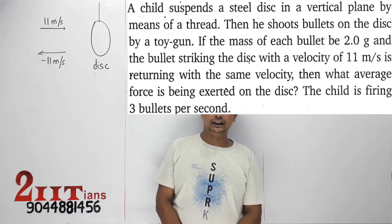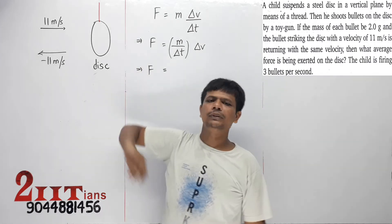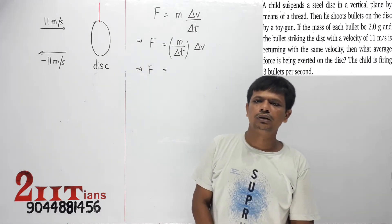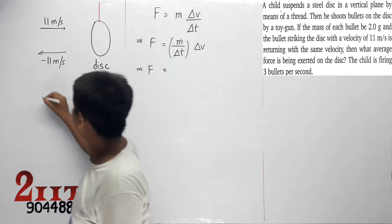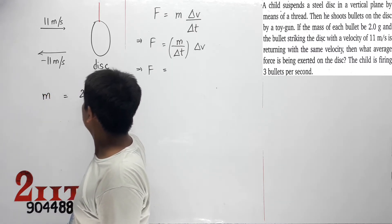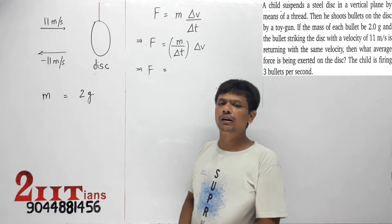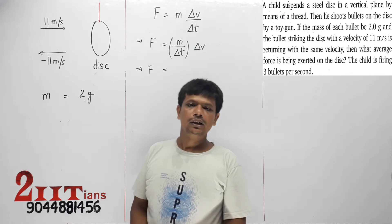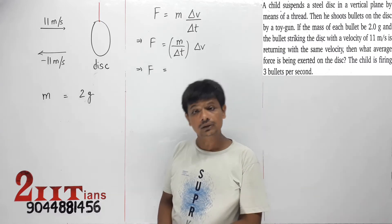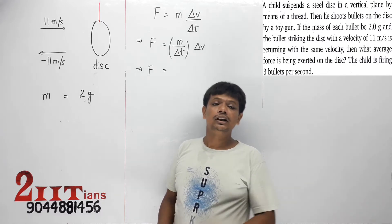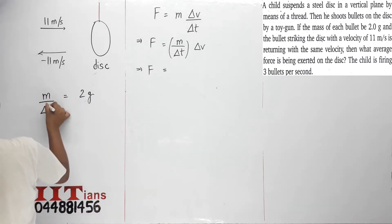Kyle suspends a steel disc in a vertical plane by means of a thread, then he shoots bullets on the disc by a toy gun. If the mass of each bullet is 2 grams and the bullet strikes the disc with a velocity of 11 meters per second and returns with the same velocity, then what average force is being exerted on the disc? The child is firing 3 bullets per second.